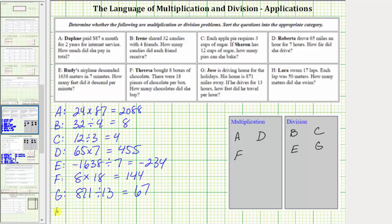And then finally for H, Laura swam 17 laps. Each lap was 50 meters. How many meters did she swim? Well, she swam 50 meters 17 times because she swam 17 laps. 17 times 50 will give us the total distance or total meters that she swam.